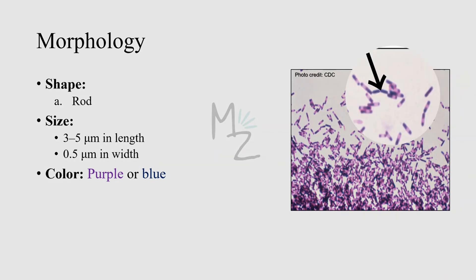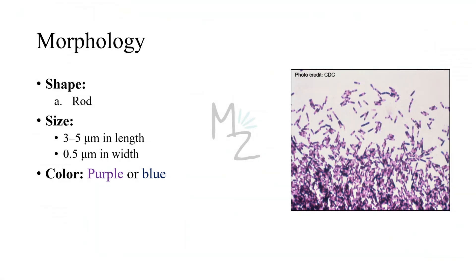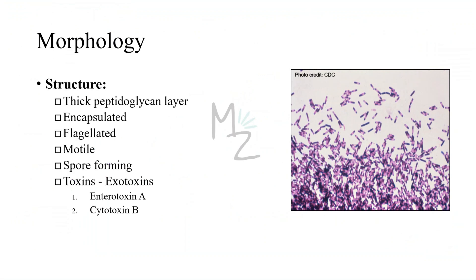The size varies in length from 3 to 5 micrometers and in width 0.5 micrometers. It appears purple or blue in color because it is gram-positive — it has a thick peptidoglycan layer in its cell wall that retains the dye, as visible in this microscopic picture. It is encapsulated and flagellated, making it motile.